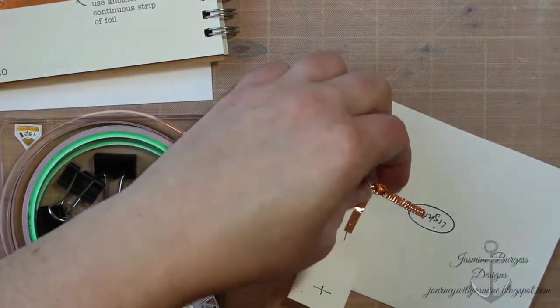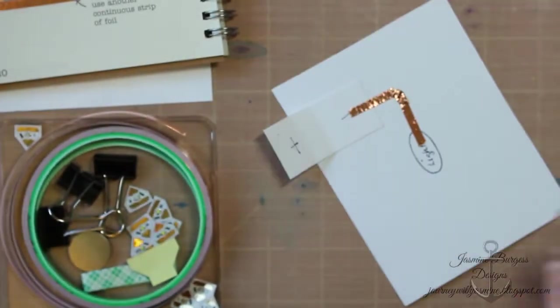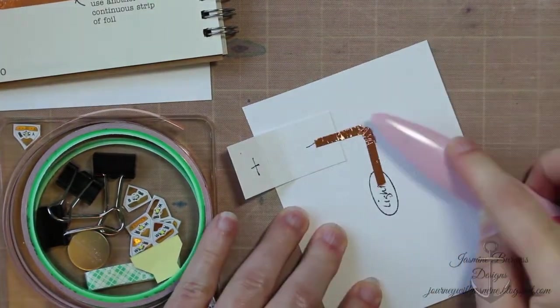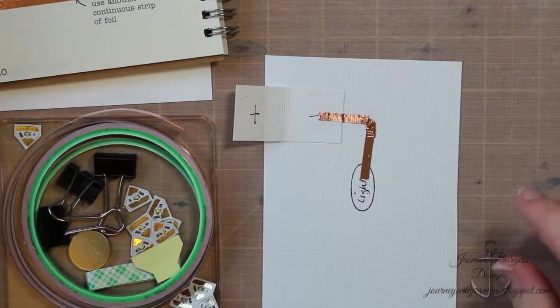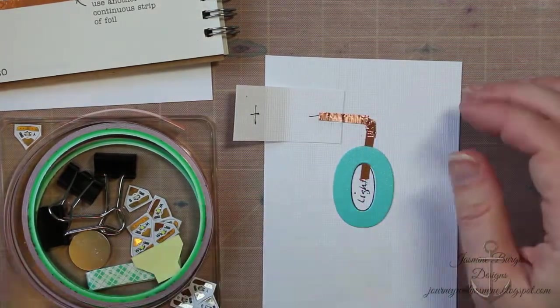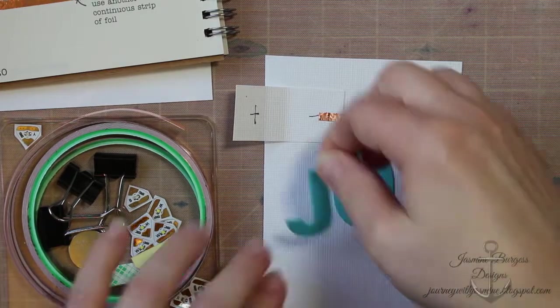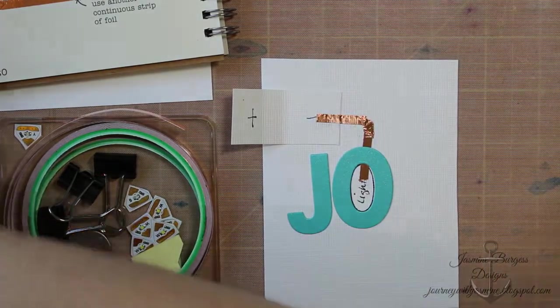So the copper tape is fairly fragile. So you do want to be careful with it. It will tear. And you do need it to be intact for the circuit to work because the electricity runs through the copper. You can put stuff on top of the copper tape and it doesn't interrupt it.